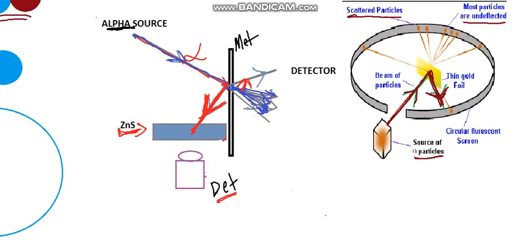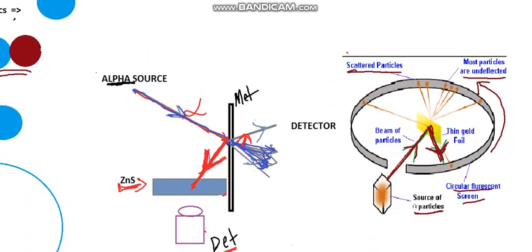We also have a circular fluorescent screen which will detect the alpha particles after scattering and deflection. These can be counted or recorded at different angles. You can use a detector here to observe the scintillation and record where the maximum and minimum alpha particles are coming from.